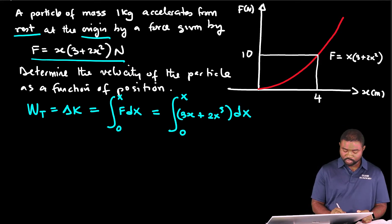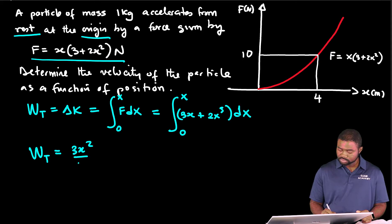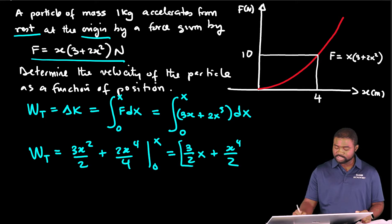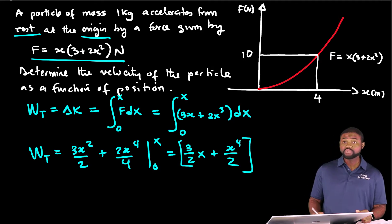This means that W_total equals 3x²/2 + 2x⁴/4 evaluated from 0 to x. If we simplify this, it gives us the total work done on the particle.